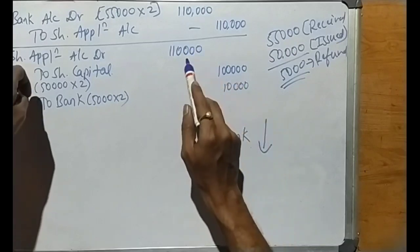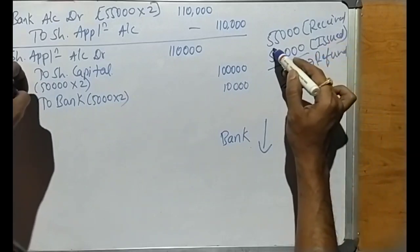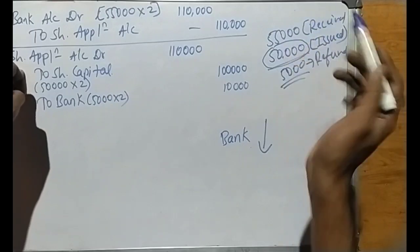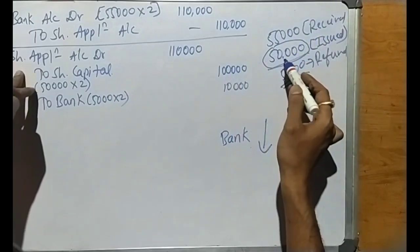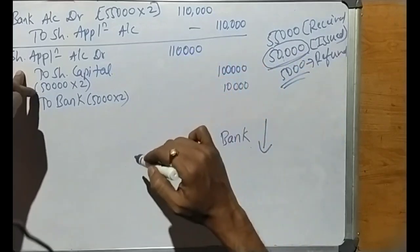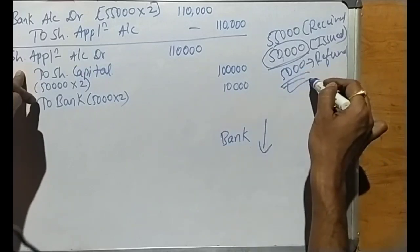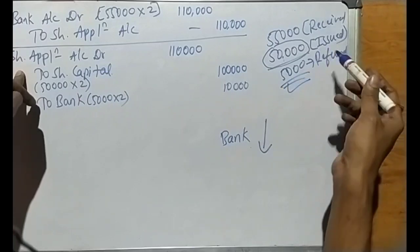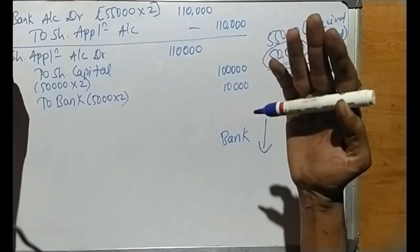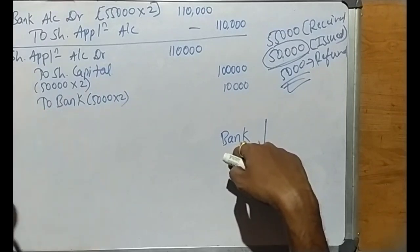Share Application Account is debited and Share Capital Account is credited Rs. 1,00,000. The remaining Rs. 10,000 (being 5,000 extra shares into Rs. 2) is refunded. So the refund entry is: Share Application Account debit to Bank Account, Rs. 10,000. Bank balance is credited to return the excess application money to the public.